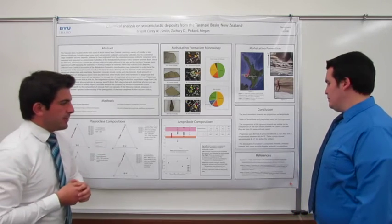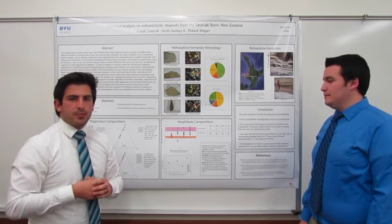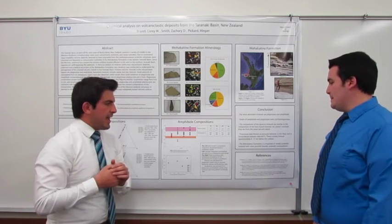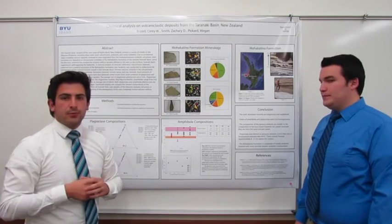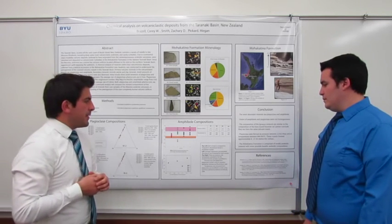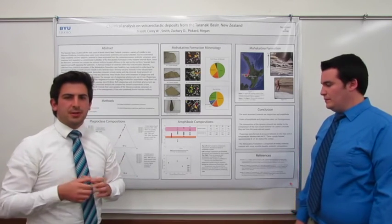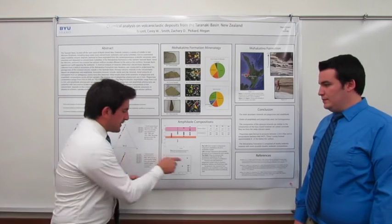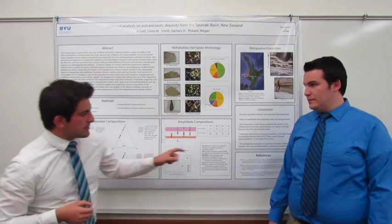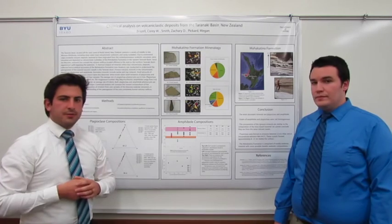As discussed, the plagioclase crystals formed between 2.3 and 6.3 kilobars, which is around 8 to 21 kilometers below the Earth's surface, and at temperatures of approximately 840 to 945 degrees Celsius. We conclude that the Mohakatino Formation is mostly andesitic material with some possible basaltic andesites, as evidenced by the M4 sample with its high magnesium number and high anorthite content, which is also supported by the 21-kilometer formation depth.